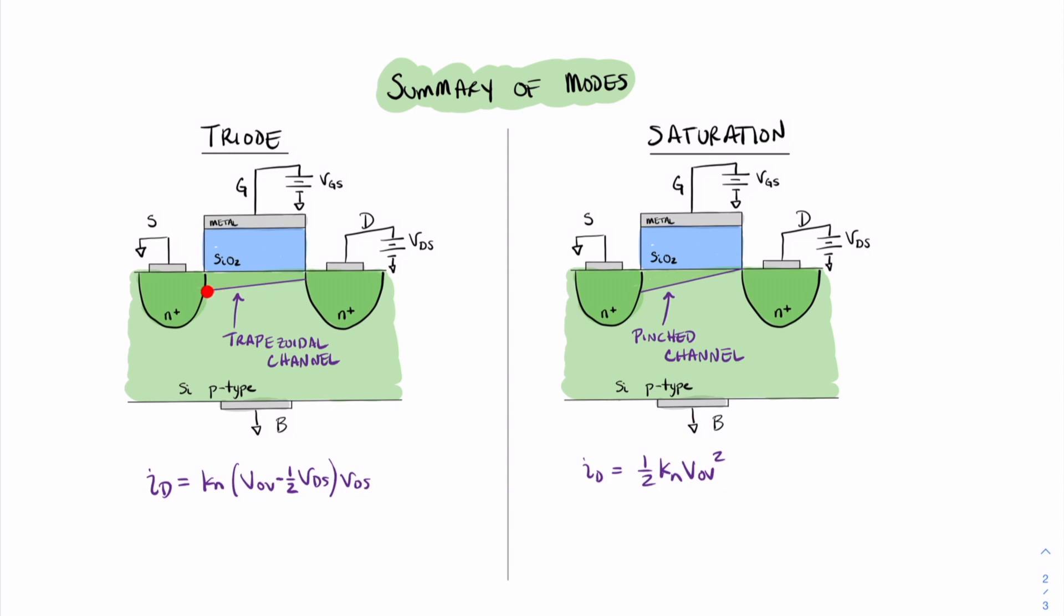However, once this value of VDS became even larger, this channel shape changed and became triangular. And that gave rise to a new mode that we call saturation. This mode is when we have a channel that is now pinched. Because of this pinched channel, we have modified the equation ID to give us one-half KN VOV squared.